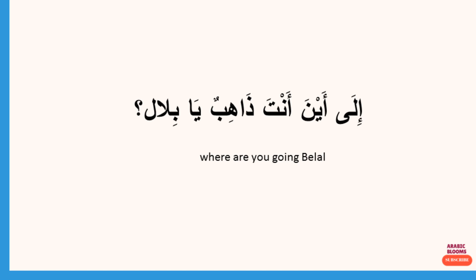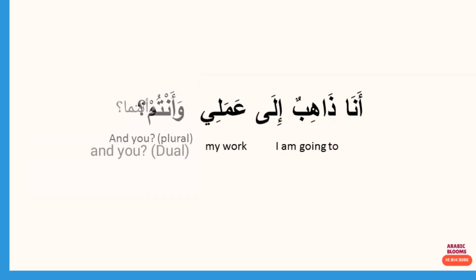إلى أين أنت ذاهب — إلى means 'to', أين means 'where', so 'to where'. أنت or أنتِ — here it's أنت. أنت ذاهب — you are going. يا بلال — where are you going, Bilal? If asking a woman, I would say إلى أين أنت ذاهبة يا سلماء. أنا ذاهب إلى — I am going to. أنا ذاهب إلى عملي — my work.